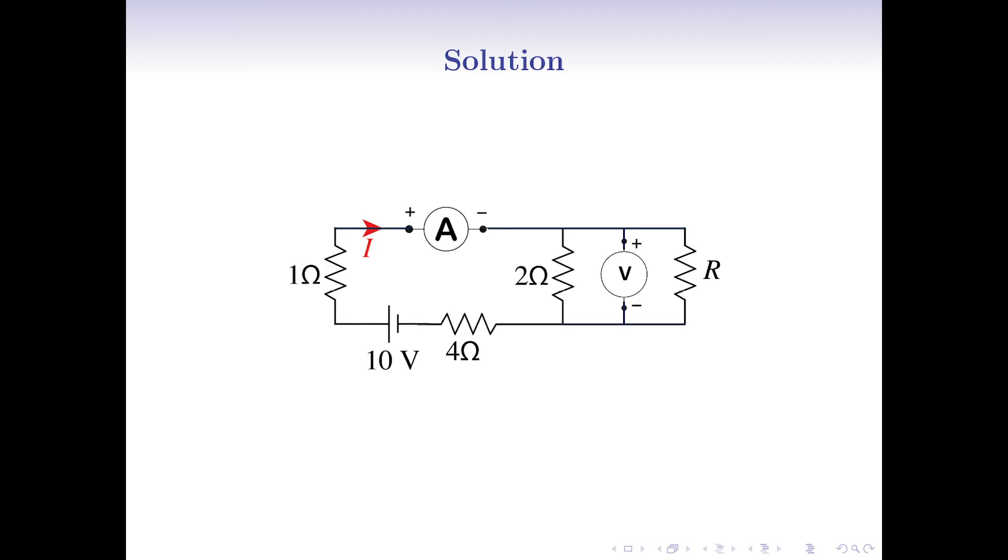So, we don't need to know the specific value of the unknown resistance R since all the parallel nodes have the same voltage. Therefore, the circuit may be shown with an open circuit or with an extra battery as you wish.